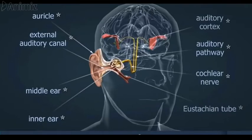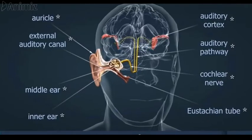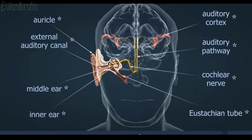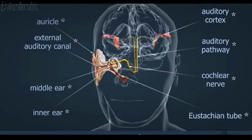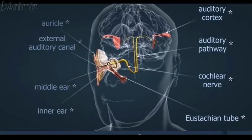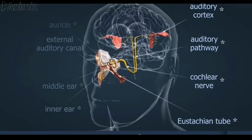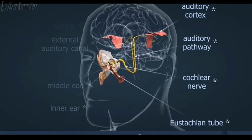The outer ear consists of the pinna, also called the auricle, ear canal and eardrum. The middle ear is a small, air-filled space containing three tiny bones called the malleus, incus and stapes, but collectively called the ossicles.